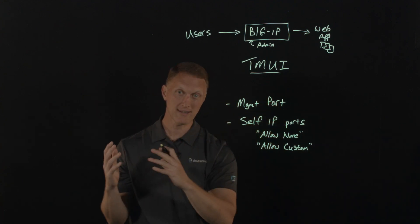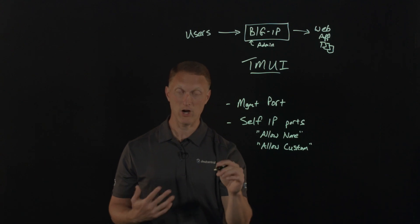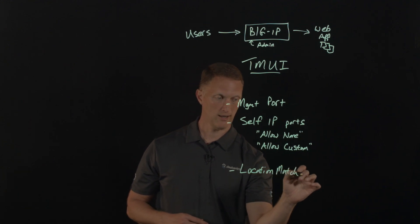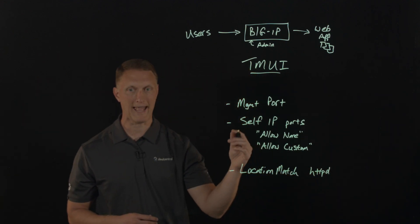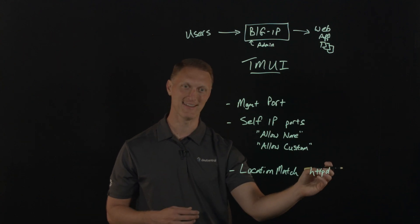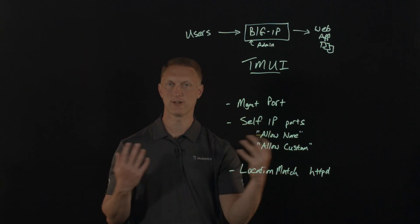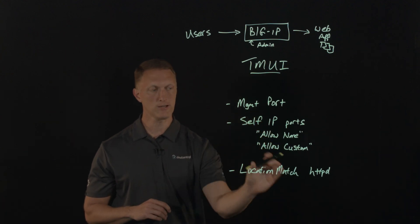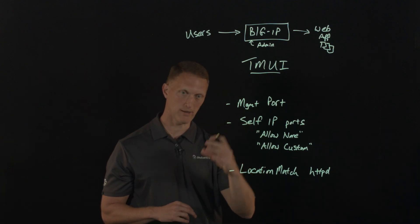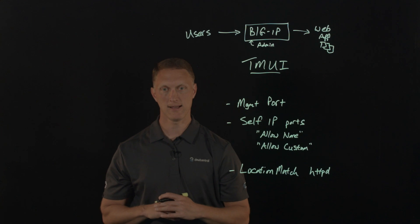These two steps — management port lockdown and Self IP lockdown — are protection against both unauthenticated and authenticated users. There is another mitigation specifically for unauthenticated users: adding a location match configuration element to HTTPD, the HTTP daemon. The syntax for this configuration change is in the security advisory we'll link to. You can do this via the command line or via iControl REST. A quick note on iControl REST: allow time for the REST commands to fully populate before moving on to the next one — give some time between iControl REST commands.